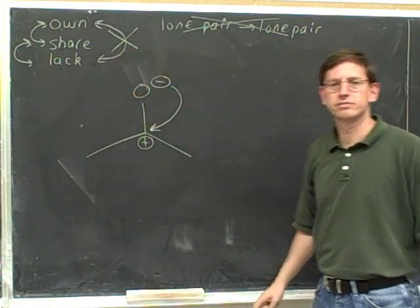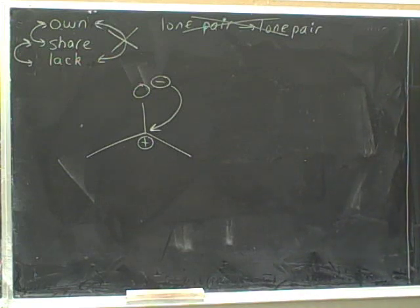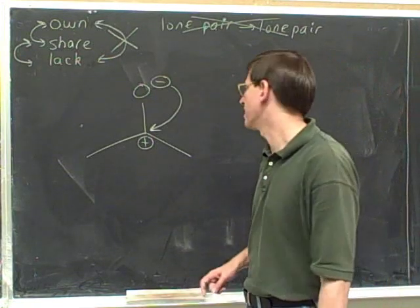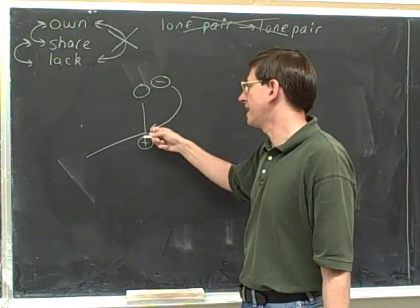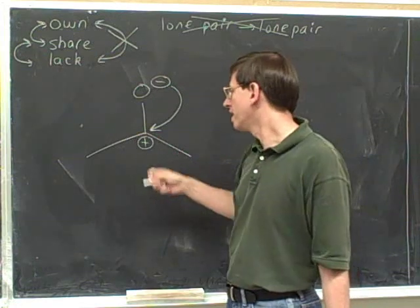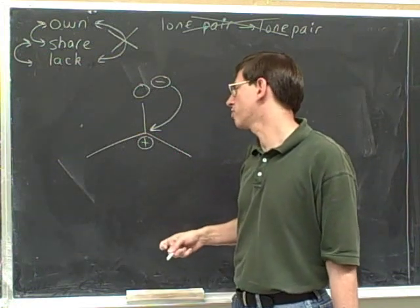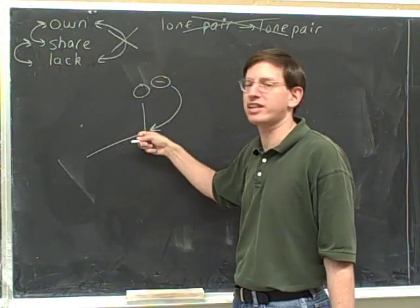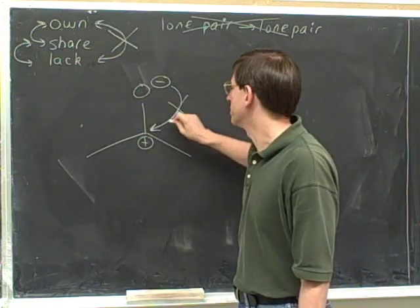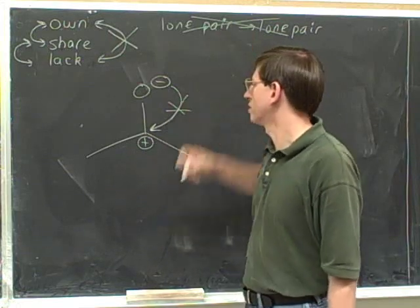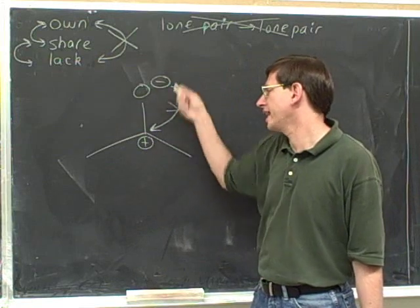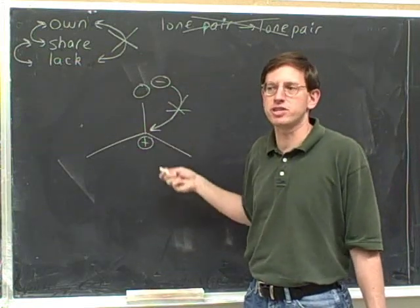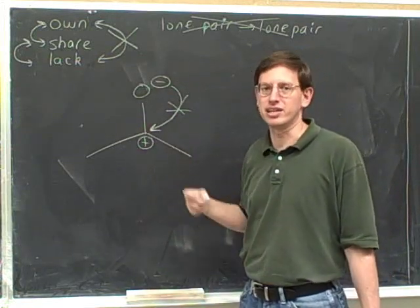Is this an illegal arrow? No, it's not legal. The tail indicates that we're moving a lone pair, and the head indicates that we're forming a lone pair, because the head is pointing directly at this atom. You're not allowed to go from one lone pair to another lone pair. This seems very reasonable because we're trying to take a negative and move it onto a positive — it seems reasonable based on the charges — but it's not legal.